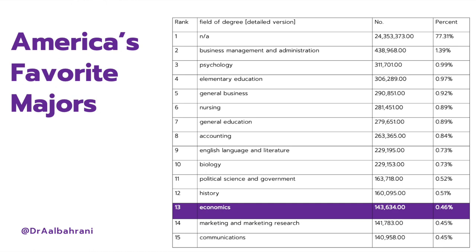The first question I asked is: where does economics rank among the top majors studied? Roughly 77% of individuals who responded to the ACS during this timeframe did not indicate a field of study. But the most popular major is business management and administration — 1.4% of the US population studied that. Then you have psychology, elementary education, general business, and so on. Economics is ranked 13th in the US during that timeframe, with 0.46% of the population studying economics. After that, you have marketing and marketing research.